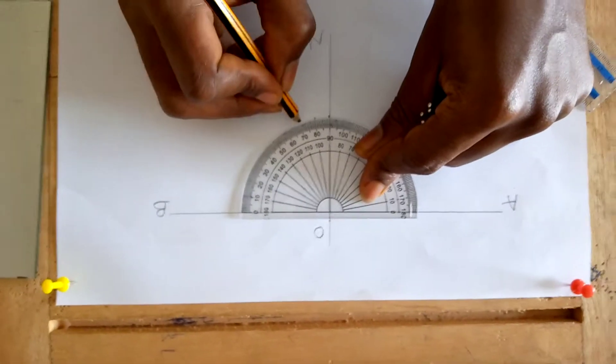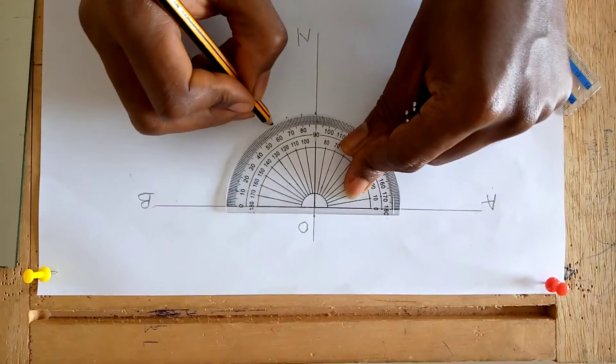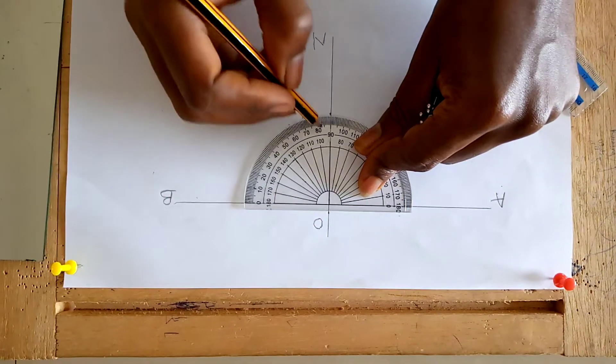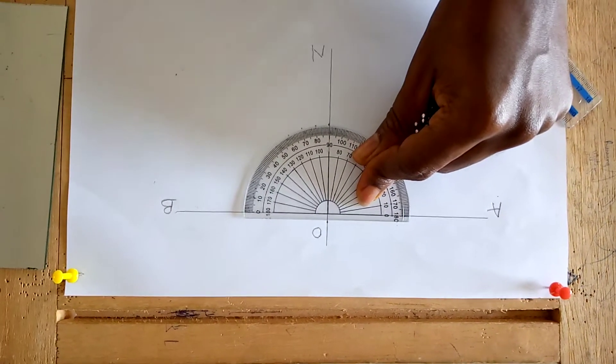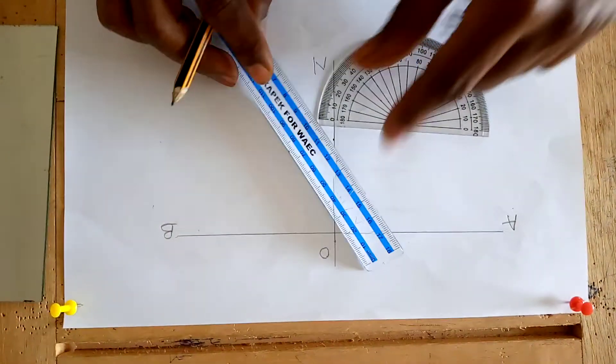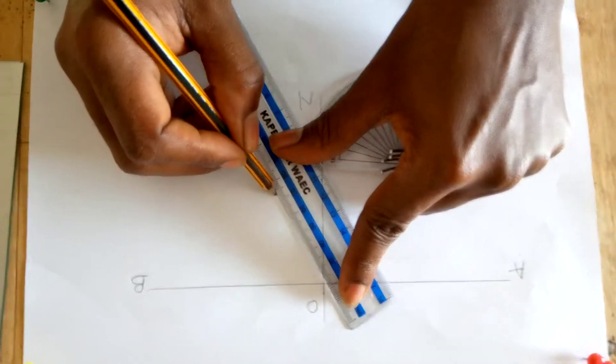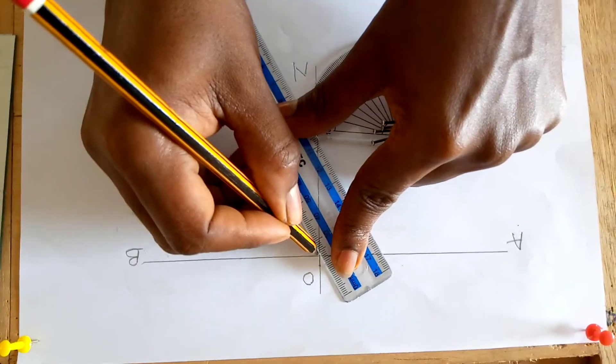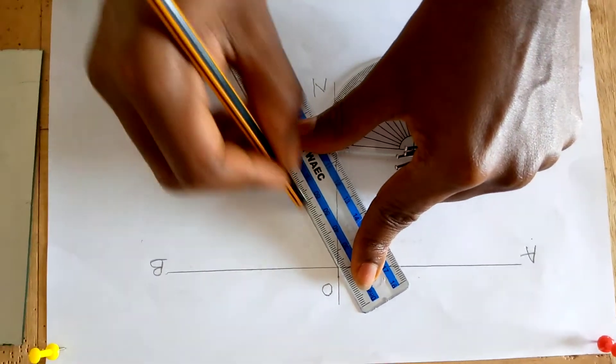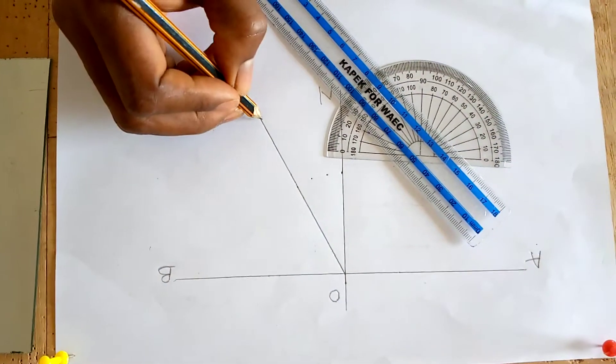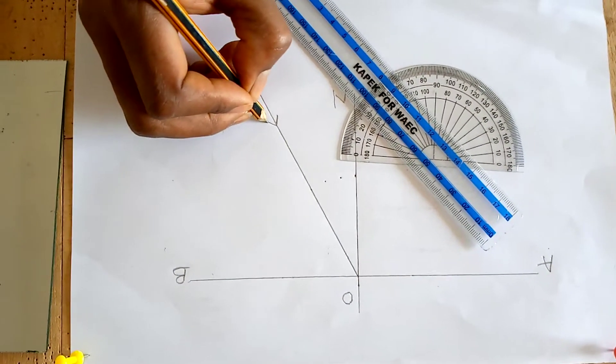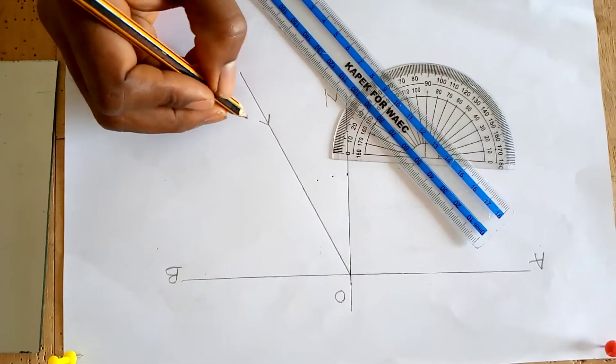Measure 30 degrees, which is this point: 80, 70, 60, 90 minus 60 will give you 30, and this point is 30 degrees. Join that point to O with a straight line. Put your arrow to indicate that it is the incident ray.